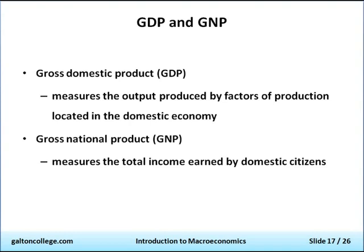Gross national product, GNP, is a measure of the total income earned by domestic citizens. So it's not just the output produced and located in the domestic economy, but also produced by, say, British companies producing overseas. GNP is equal to GDP plus net income from abroad.